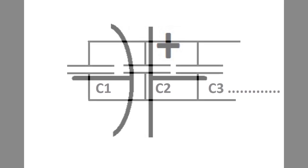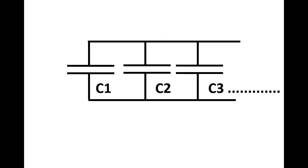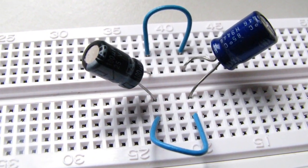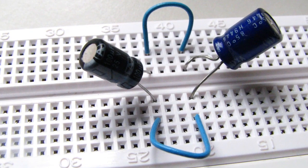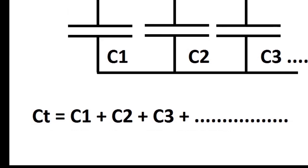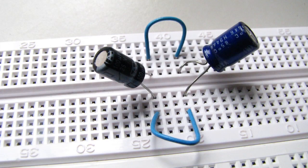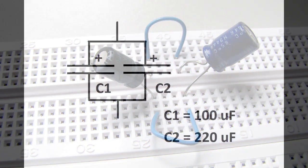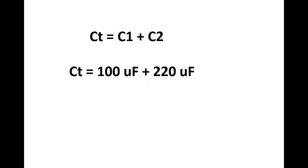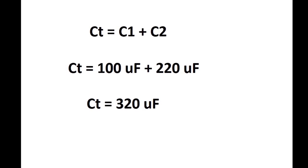Capacitors can be combined in series and parallel to create different values. These capacitors are connected in parallel. The value of capacitors connected in parallel is simply the sum of each capacitance. Here we have a 100 microfarad capacitor and a 220 microfarad capacitor connected in parallel. Their combined value is simply 100 plus 220 microfarads. 320 microfarads.